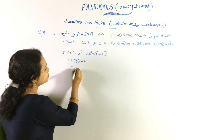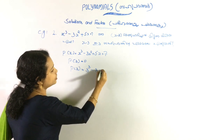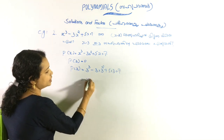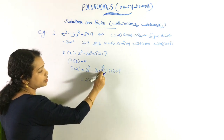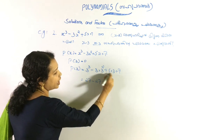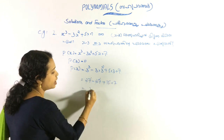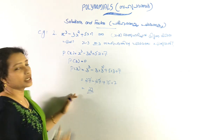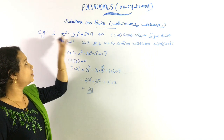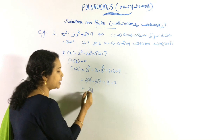We compute P(3): substitute x = 3 into x³ - 3x² + 5x + 7. So: 3³ - 3×(3²) + 5×3 + 7 = 27 - 3×9 + 15 + 7 = 27 - 27 + 15 + 7. The 27s cancel, giving 15 + 7 = 22. Therefore the remainder when dividing by (x - 3) is 22.